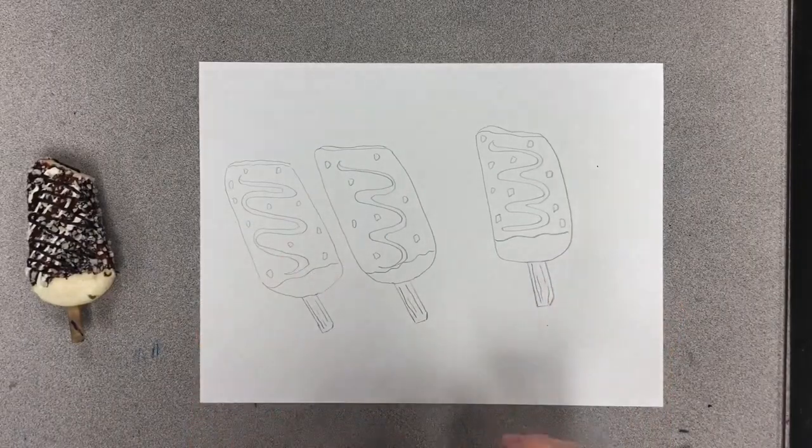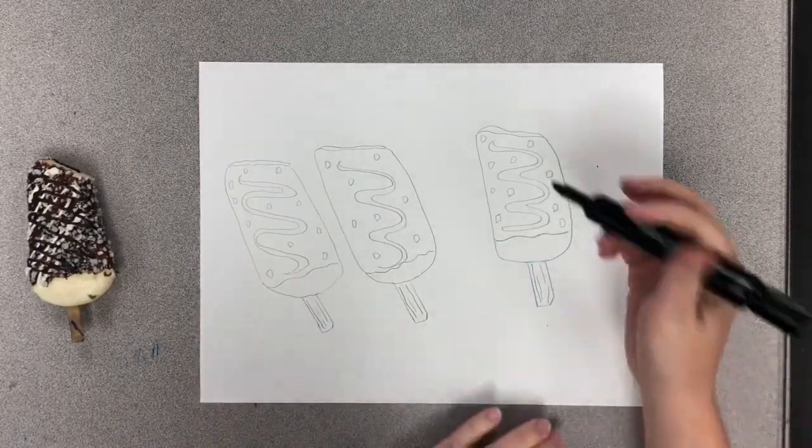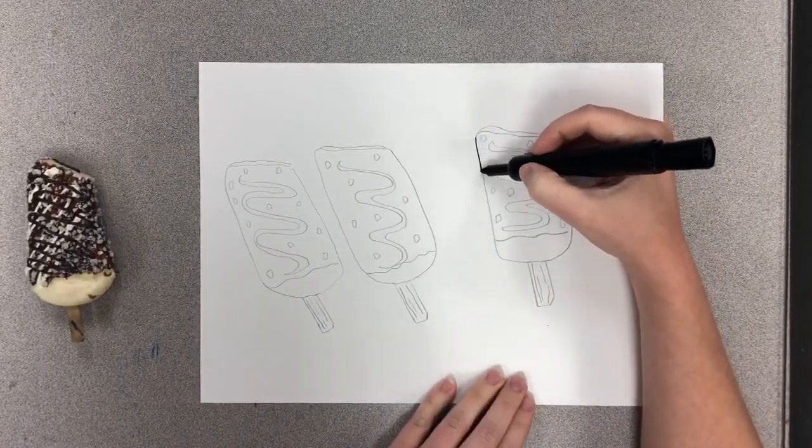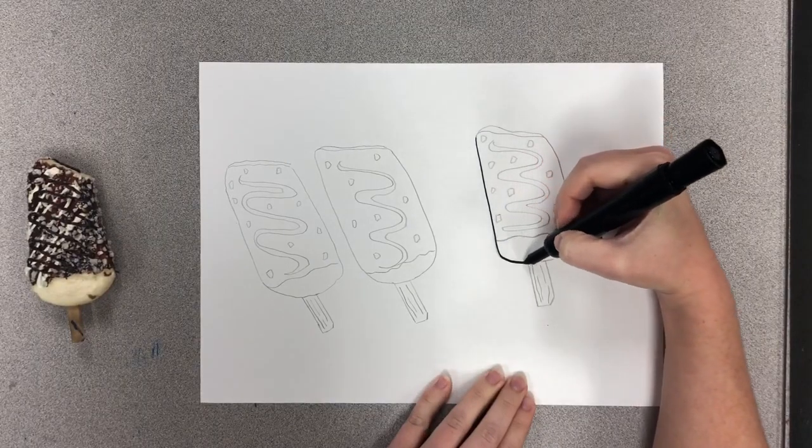The last thing I'm going to do is I'm just going to trace over my pencil lines with a sharpie so that I can see my ice cream cones really well.